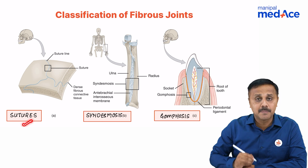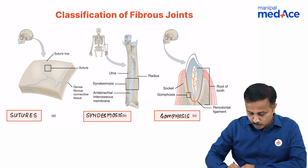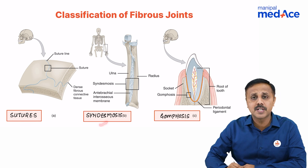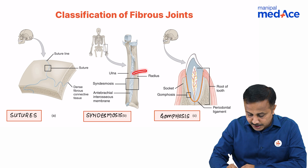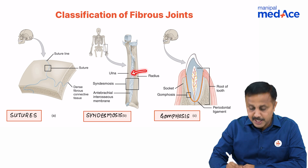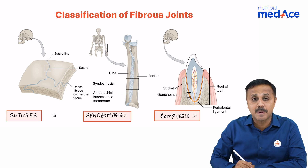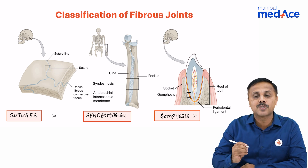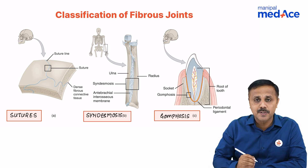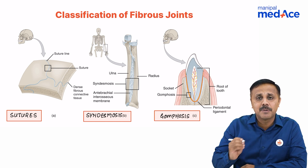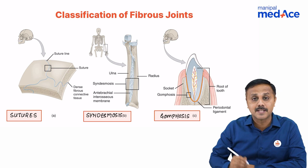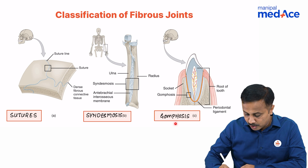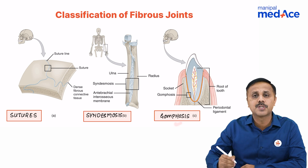We will learn a little bit in detail about sutures. What is syndesmosis? When two bones are interconnected by an interosseous membrane, this is called syndesmosis. The middle radio-ulnar joint and middle tibiofibular joints are the best examples.